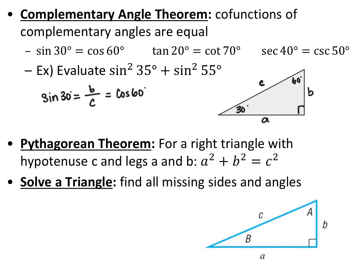The complementary angle theorem says that co-functions of complementary angles are equal. Co-functions are sine and cosine, tangent and cotangent, secant and cosecant. And complementary angles add up to 90 degrees.